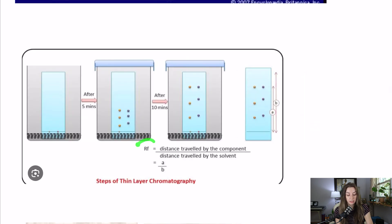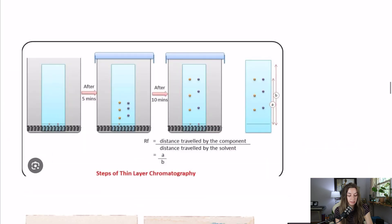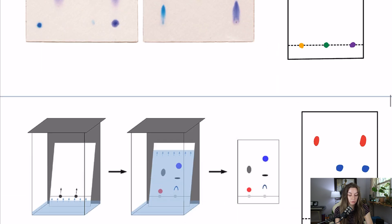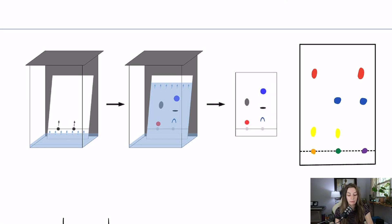You can also find what's called the RF value, or the retention factor value. This is not as high yield for the MCAT, but you'll probably remember it from chemistry class. The retention factor is the distance traveled by the component — the little dots — divided by the distance traveled by the solvent in total. So that red dot maybe went one-tenth of the way the solvent did, giving a retention factor of 0.1, whereas something like this gray dot may be closer to 0.5 or 0.6.